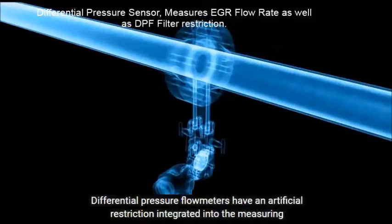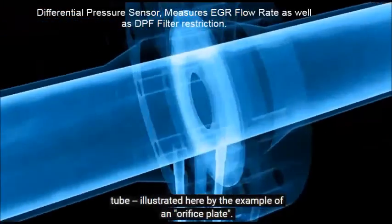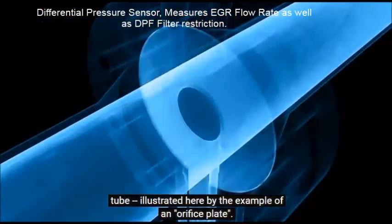Differential pressure flow meters have an artificial restriction integrated into the measuring tube, illustrated here by the example of an orifice plate.